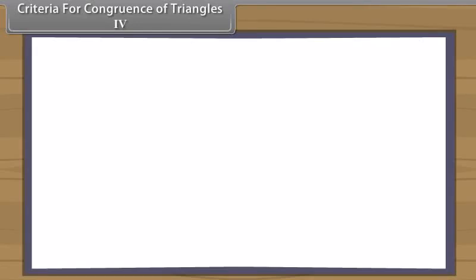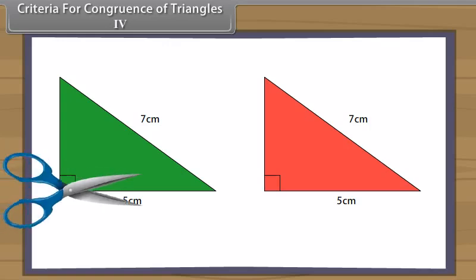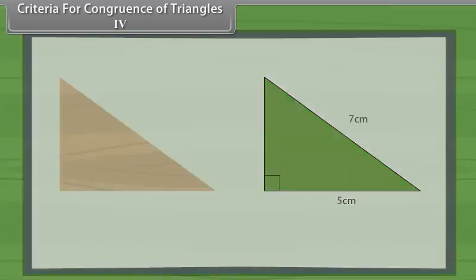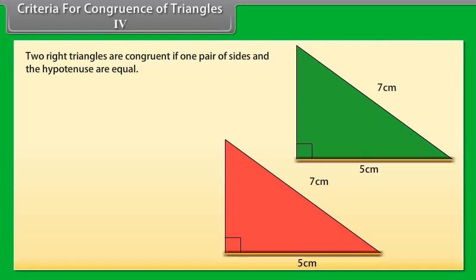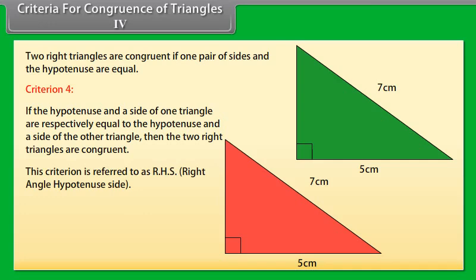Criteria for congruence of triangles, Criterion 4: Now construct two right-angled triangles with hypotenuse equal to 7 cm and one side equal to 5 cm each. Cut them out and place one triangle over the other with the equal side placed on each other. We will observe that the 2 triangles cover each other completely and so they are congruent. We can say that 2 right triangles are congruent if one pair of sides and the hypotenuse are equal. Criterion 4: If the hypotenuse and a side of one right triangle are respectively equal to the hypotenuse and a side of the other triangle, then the 2 right triangles are congruent. This criterion is referred to as RHS — right-angle hypotenuse side.